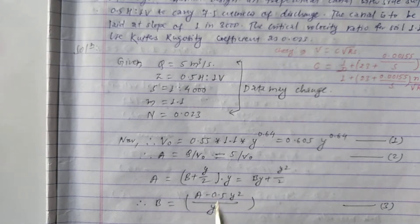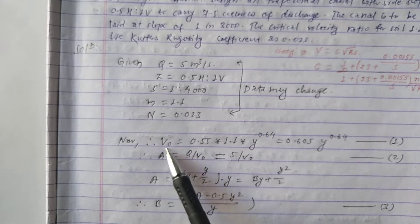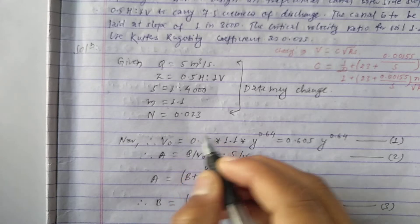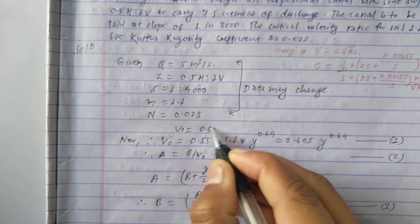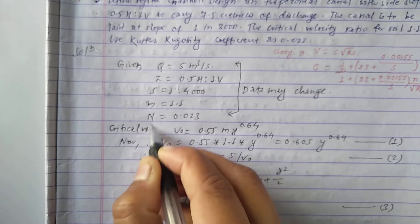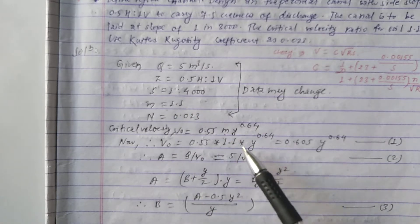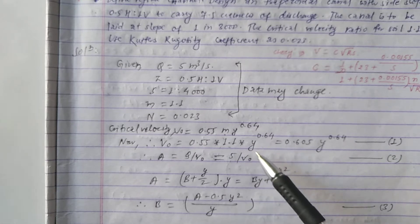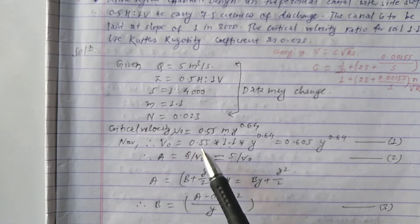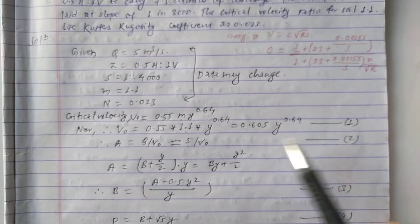As the very first step, we calculate the critical velocity using the formula: V₀ = 0.55 × m × y^0.64. Substituting m = 1.1 (given) and leaving y as unknown, the critical velocity becomes V₀ = 0.605 × y^0.64. Let this be Equation 1.